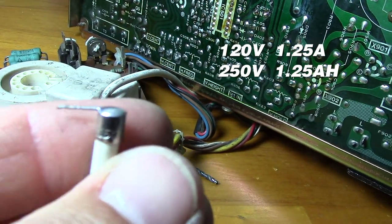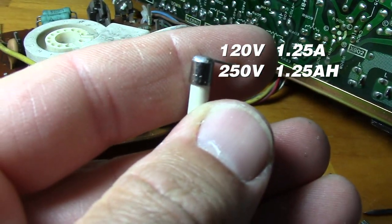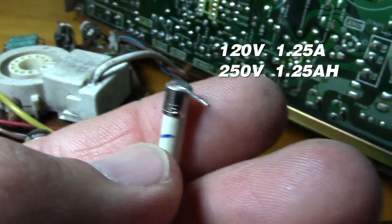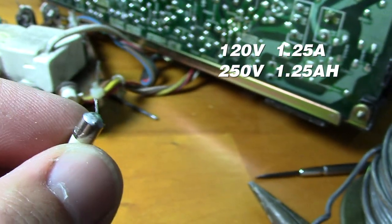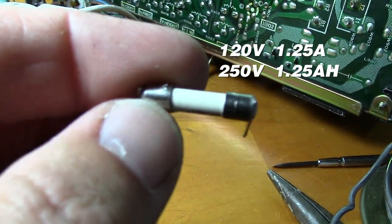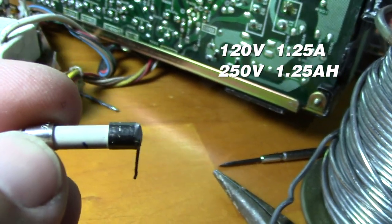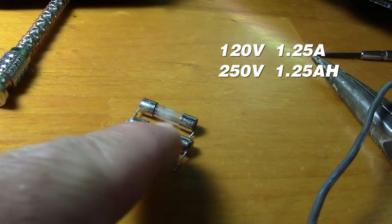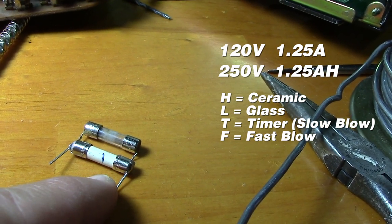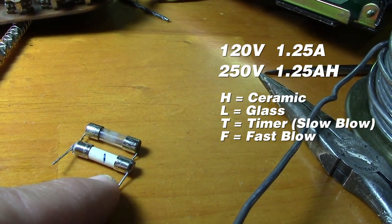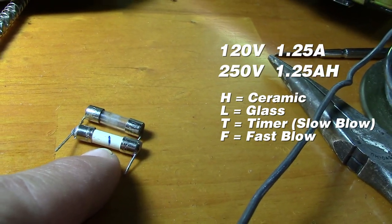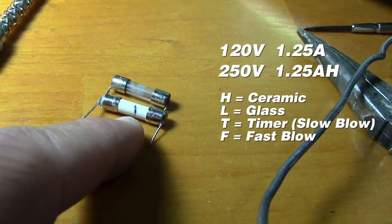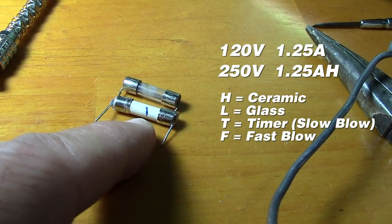So if you see an H that means ceramic. If you see an L that means it's glass. But the other thing is you might see a T, and that's a timer fuse or slow blow is what they're more commonly called. And if there's an F on it, it's a fast blow or quick blow fuse.